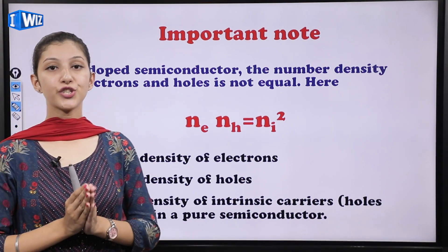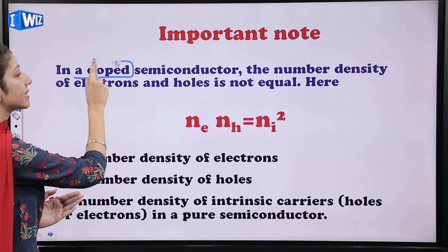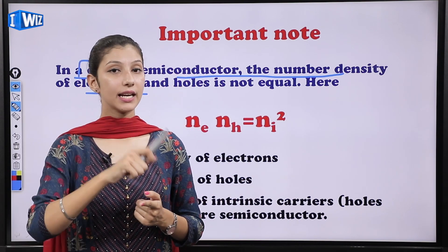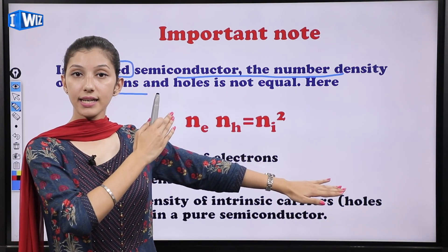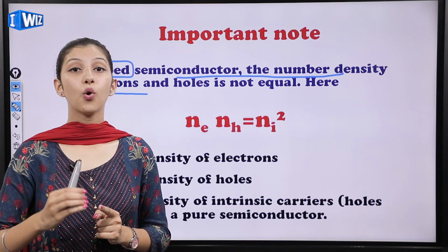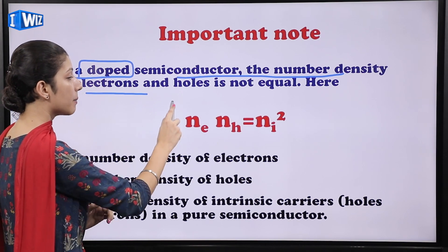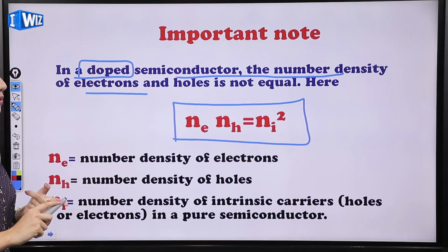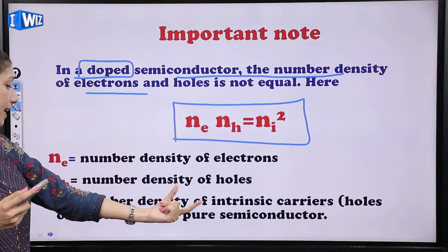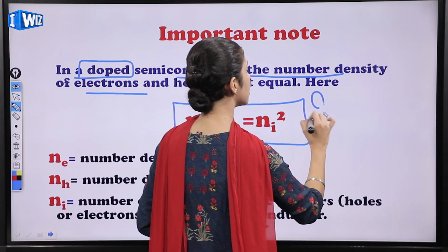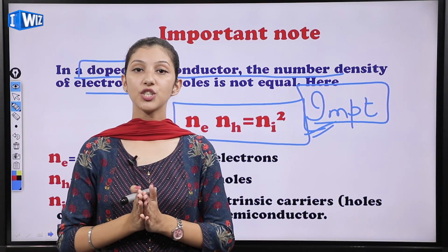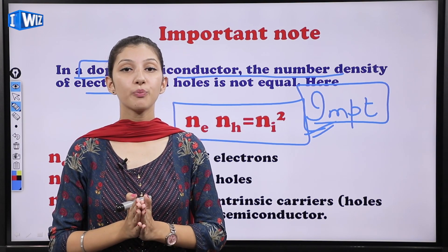In a doped semiconductor, the number density of electrons and holes is not equal, unlike in intrinsic semiconductors. The important relation is: ne × nh = ni², where ne is the number density of electrons, nh is the number density of holes, and ni is the number density of intrinsic carriers in a pure semiconductor. In the next video we will study about P-N junction. Keep revising and stay tuned on this channel, IWIS.